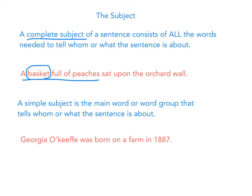'Georgia O'Keeffe was born on a farm in 1887.' Who was born on the farm in 1887? It was Georgia O'Keeffe. This is our complete subject and also our simple subject, because remember, if it's a proper noun, it would be both.